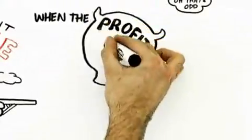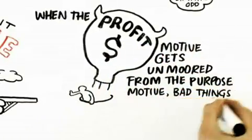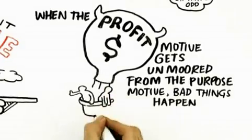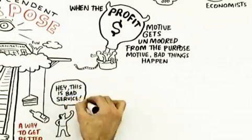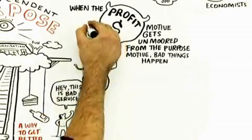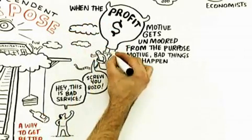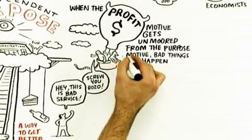And what we're seeing now is in some ways, when the profit motive becomes unmoored from the purpose motive, bad things happen - bad things ethically sometimes, but also bad things just like crappy products, like lame services, like uninspiring places to work.